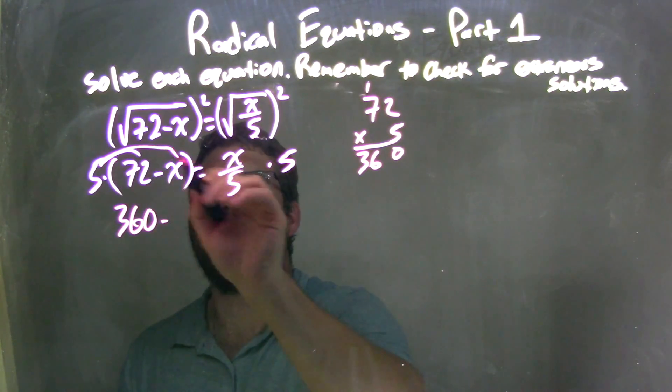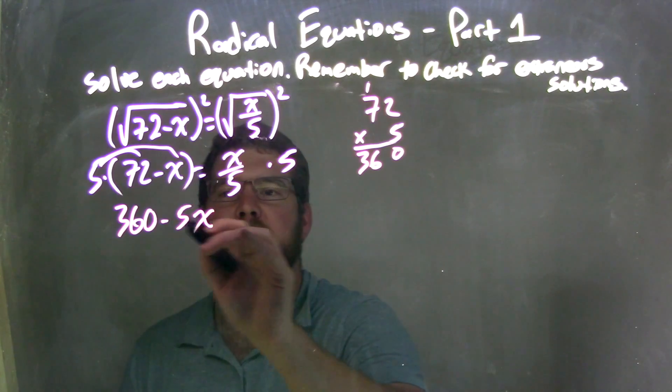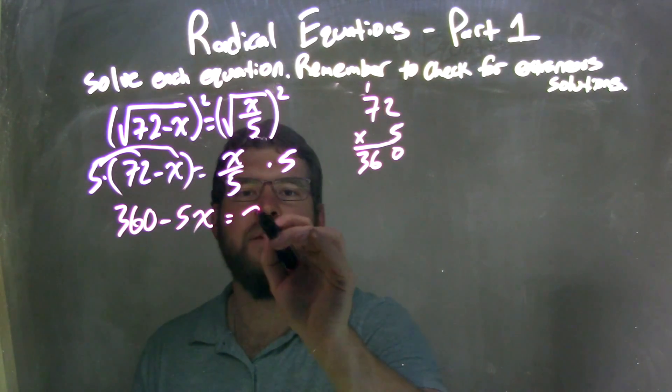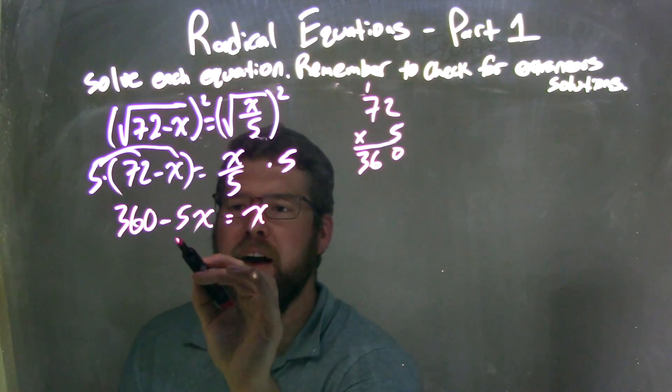360 minus 5 times x, which is 5x, equals these eliminate just x. Now I'm going to add a 5x to both sides.